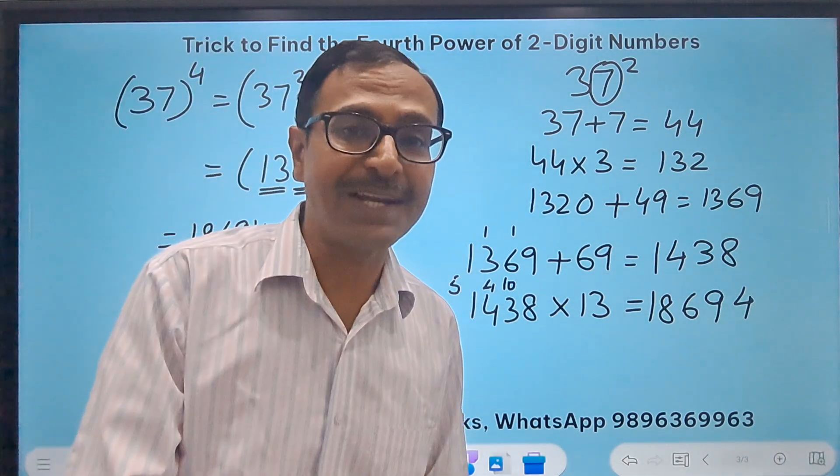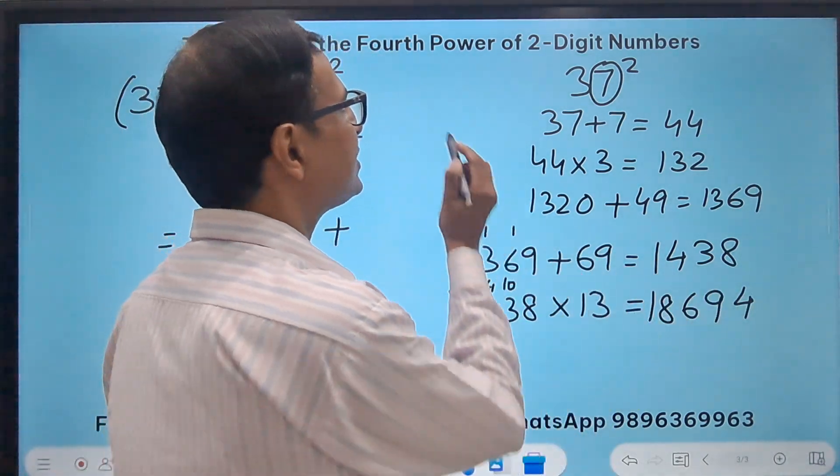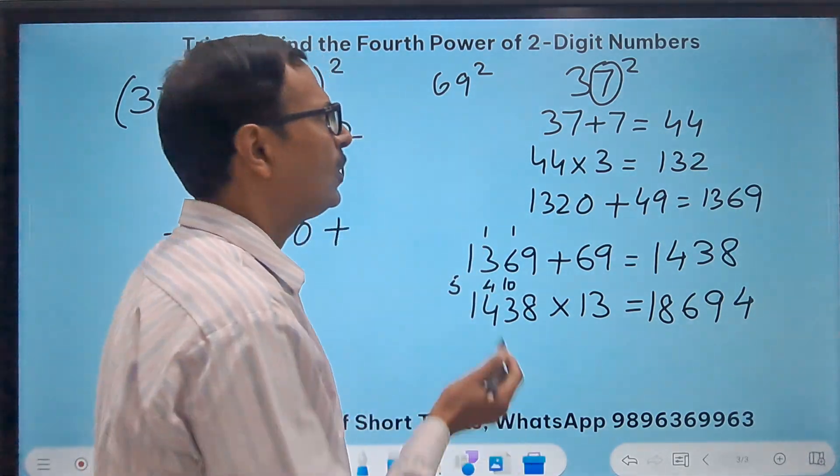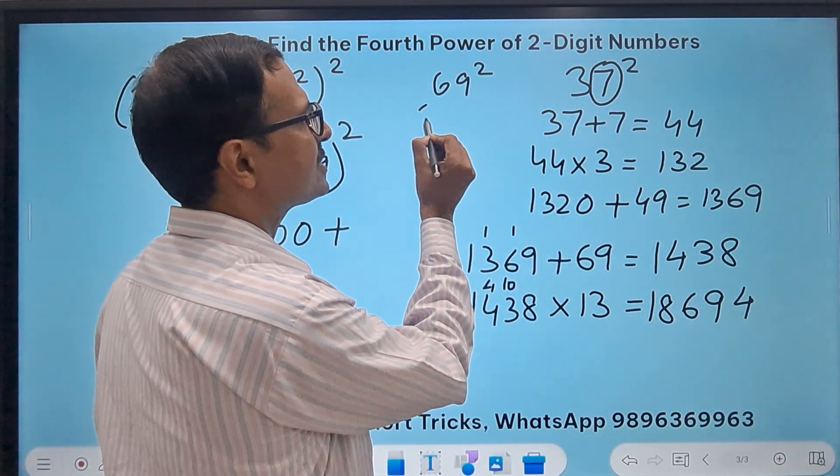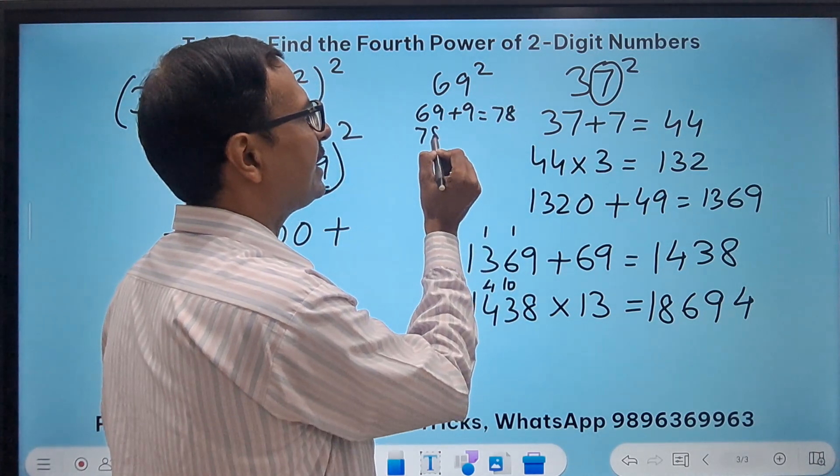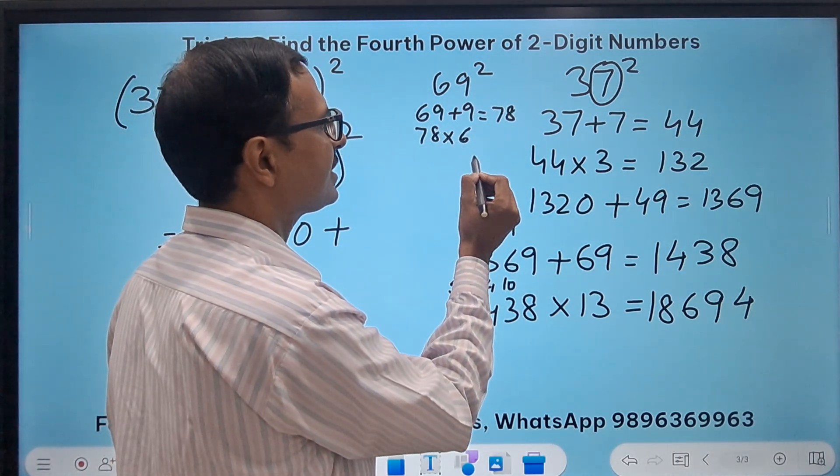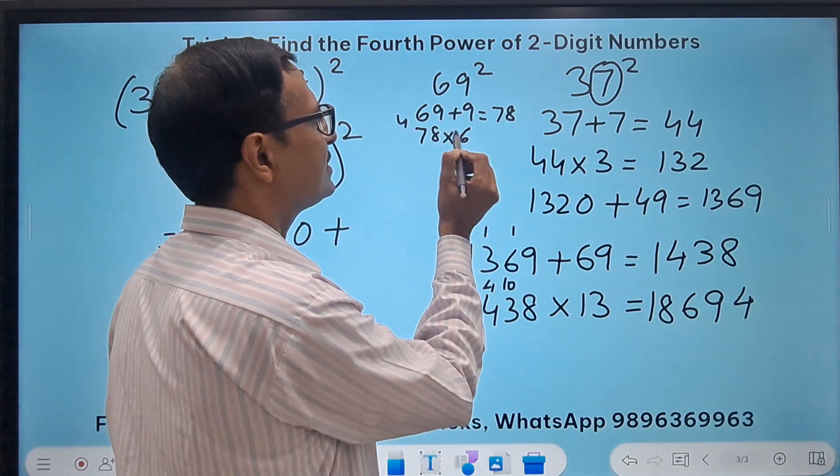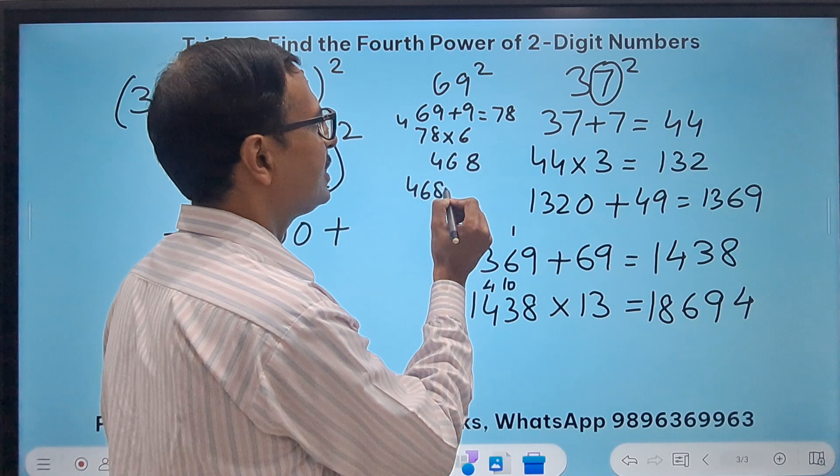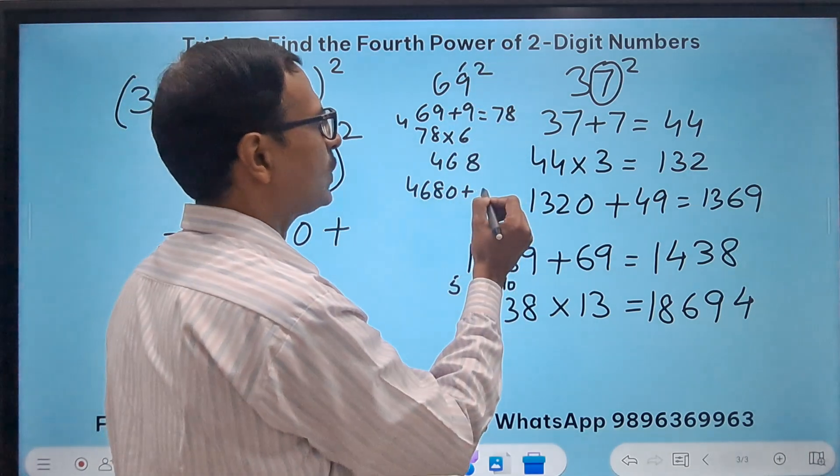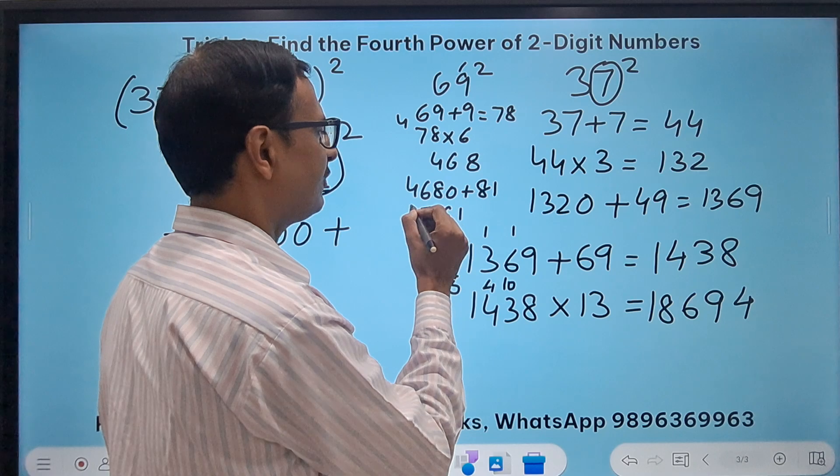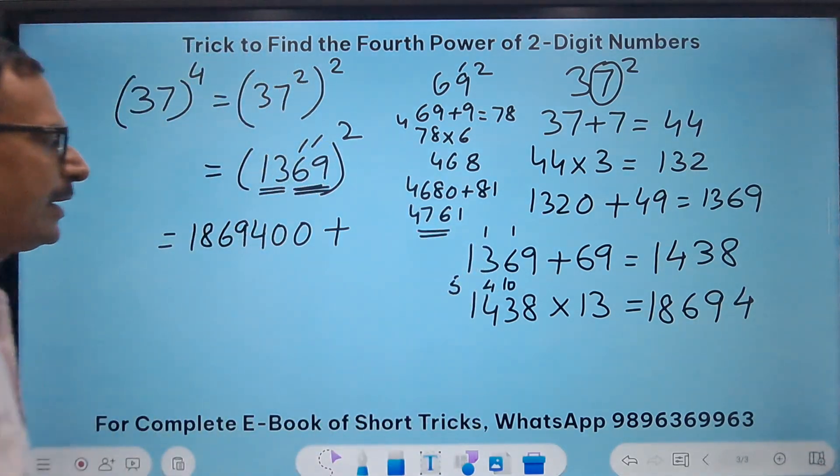So I get 18,694. Now what happens to 18,694? I took two digits here, so two zeros. Plus I have to add 69 square. How do you find 69 square? Again use the same method. 69 plus 9 is 78, 78 times 6 is 468, then 4680 plus 9 square which is 81 gives me 4,761.